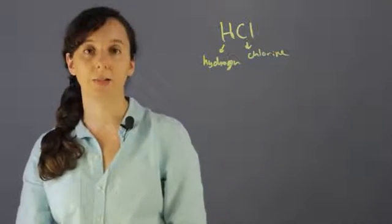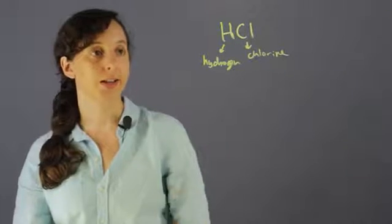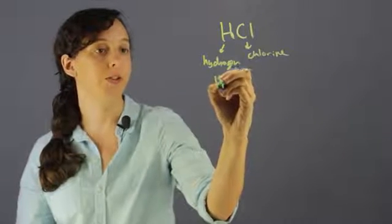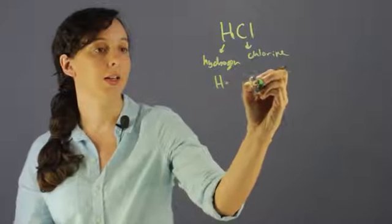And if you check that periodic table, you'll see that hydrogen has one valence electron and chlorine has seven.